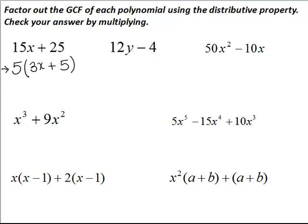Now to check, we will simply distribute back in and we should obtain what we originally started with. So 5 times 3x is of course 15x, and 5 times 5 is 25. So we've checked that one.